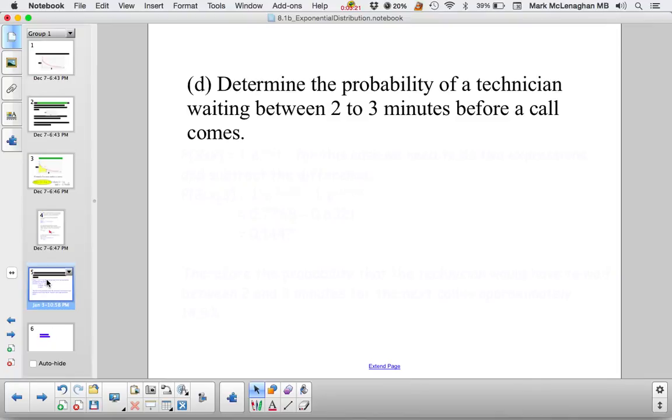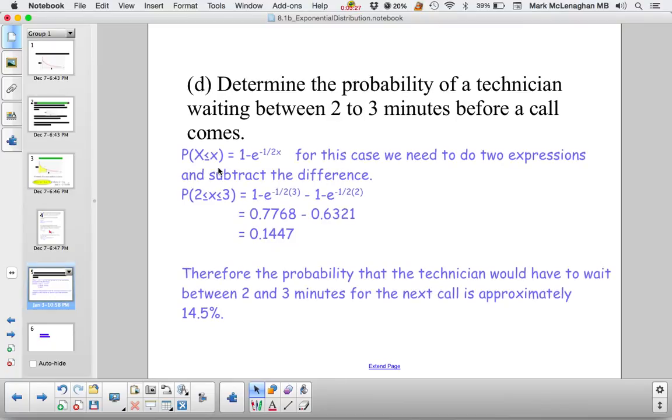So on to the next question. Determine the probability that the technician will wait between 2 to 3 minutes before a call comes. In this case, we actually have to do a couple of calculations and then subtract them. So we have x equals 3 minus x equals 2. If we do the graph, there would be a little space in between that interval between 2 and 3. So that's why we have to subtract 2 from 3, because we don't want from 2 below. We just want the little interval. This is the value of probability for less than 3 and this is the probability for less than 2, which we saw in the previous question. So we subtract them. The probability that will land between 2 and 3 is about 14.5%.